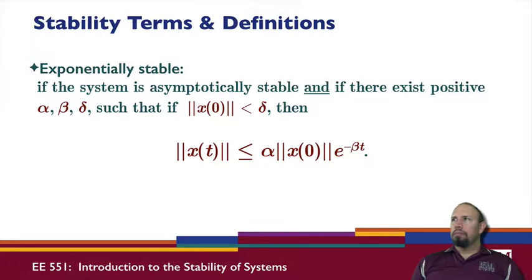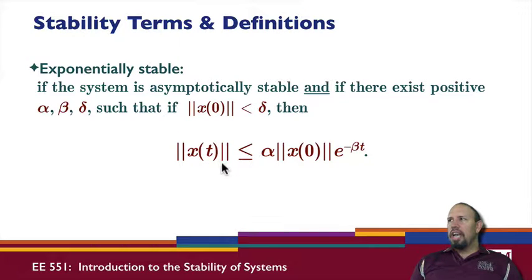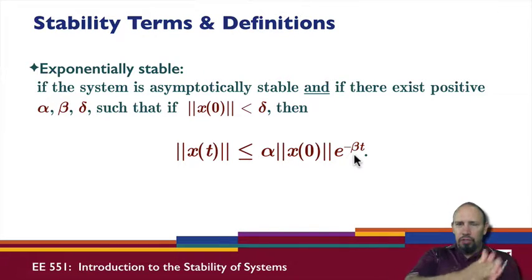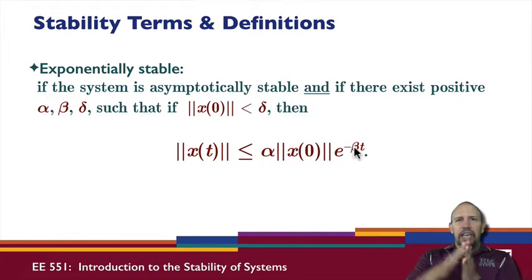Exponentially stable is a further nesting: if the system is asymptotically stable and there exist positive constants alpha, beta, and delta such that starting within a ball of radius delta, x of t stays within the envelope alpha times e to the minus beta t. Since e to the minus beta t is a decaying exponential, the system not only converges but converges exponentially fast at rate beta.